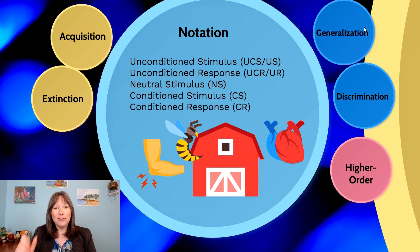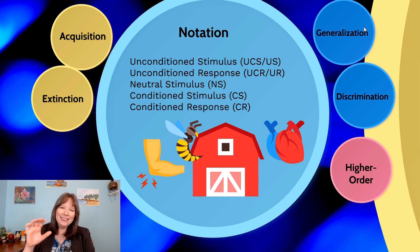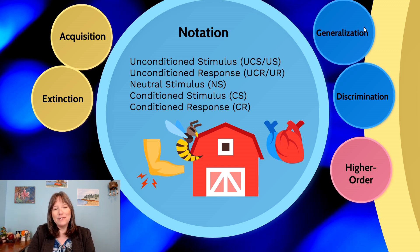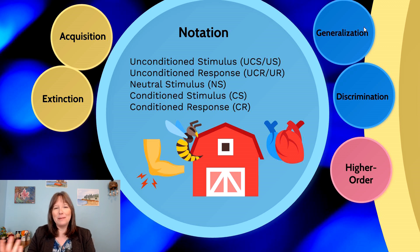Then we have what's known as a neutral stimulus (NS). This is something that prior to conditioning has no dramatic impact on us — it's benign and neutral. In the dog example, this is the bell; before conditioning it wasn't doing much, just something that happened, like footsteps. It didn't trigger fight-or-flight, didn't cause panic, didn't make them calm down — no reflex. Infants, for instance, are not born afraid of insects, so a wasp would be a neutral stimulus to them before any learning or conditioning has occurred.